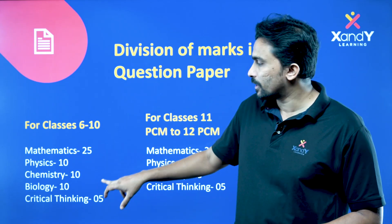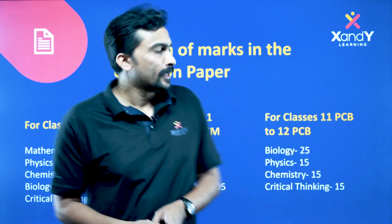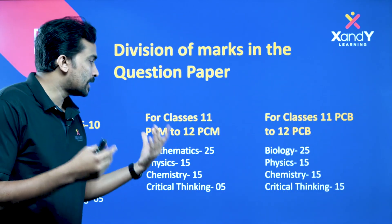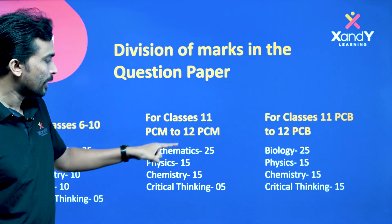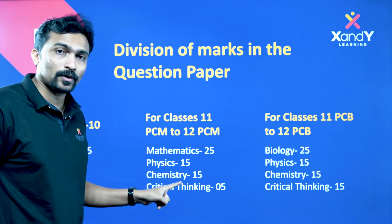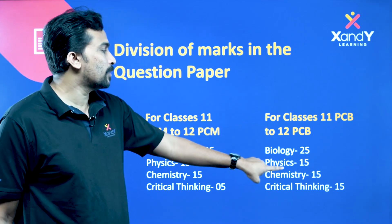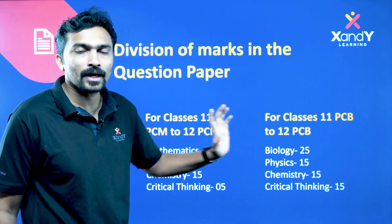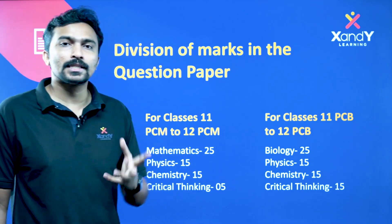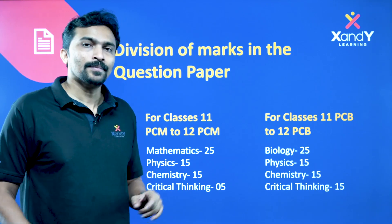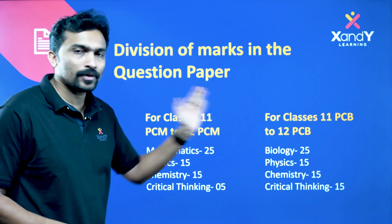For higher classes: Mathematics has 20 questions, Physics 10, Chemistry 10, Biology 10, and Critical Thinking 5 questions. For Plus 1 and Plus 2, PCM stream: Physics and Chemistry follow a similar pattern. For the Biology stream, Biology has 25 questions and Physics and Chemistry have 15 questions each. You can select your stream — Physics, Chemistry, or Biology accordingly.